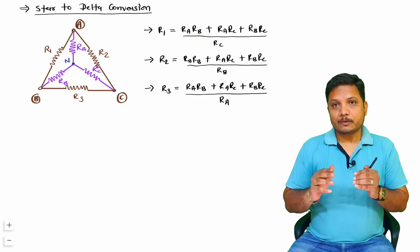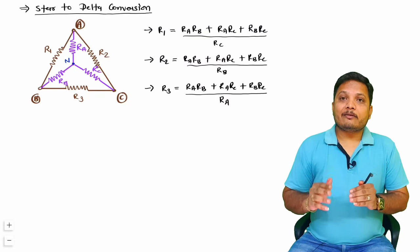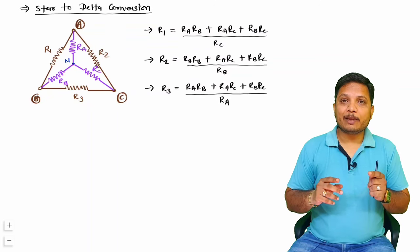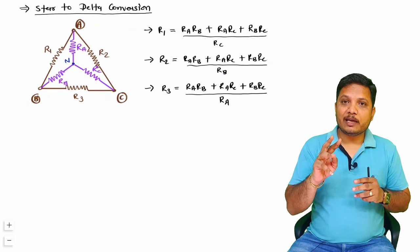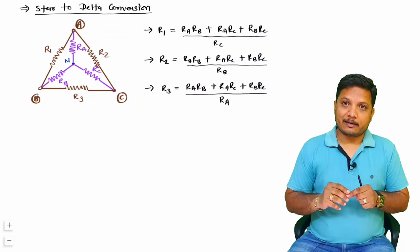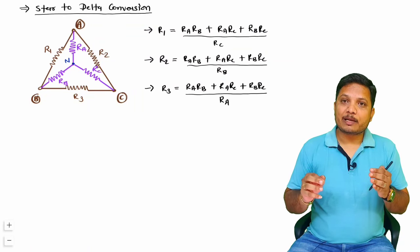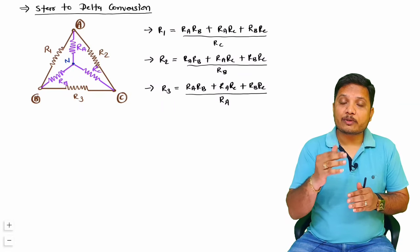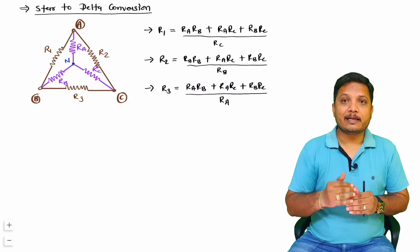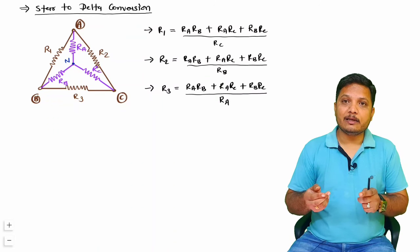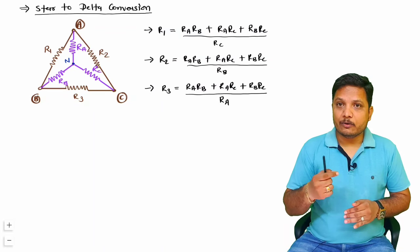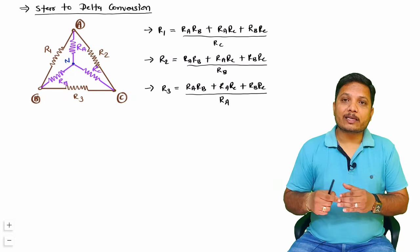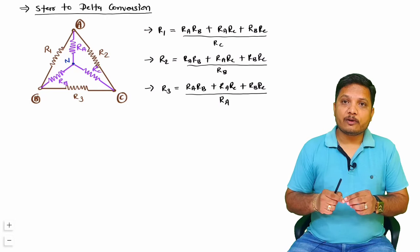Whenever you want to convert a star network into a delta network, multiply each pair of the three resistors and add: RA·RB + RA·RC + RB·RC, then divide by the opposite resistance of the delta element you are calculating. Now I will explain the proof of these formulas.